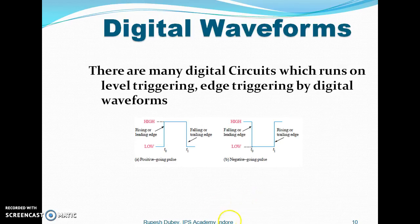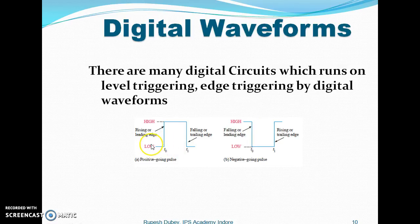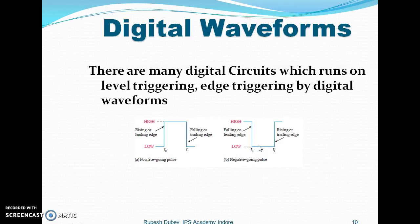Digital waveforms have transitions. A positive-going edge goes from low to high, and a negative-going edge goes from high to low. Many devices in a digital system trigger on their starting edge — some devices trigger on the low-to-high transition, while others trigger on the high-to-low transition.